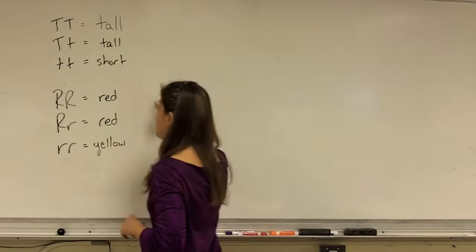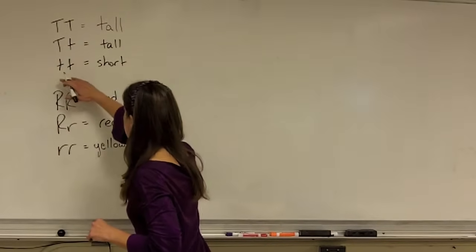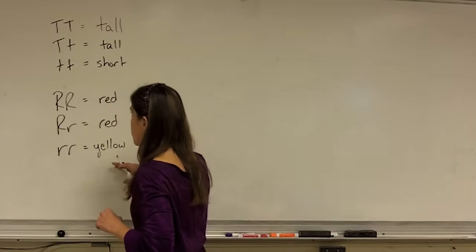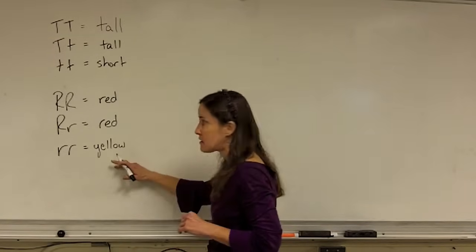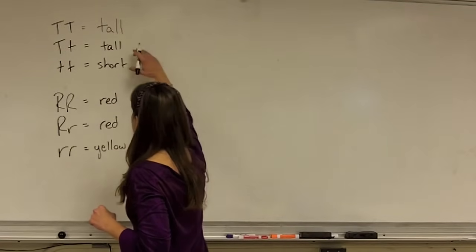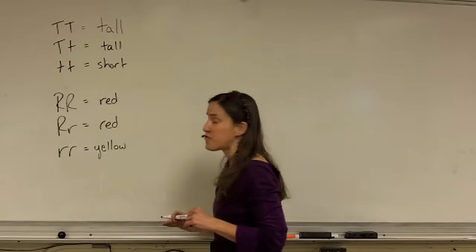What I've shown right now is a key, meaning the genotypes and phenotypes for each trait. Both of these traits show the pattern of complete dominance, meaning that if there is one dominant allele, the plant shows the homozygous phenotype.